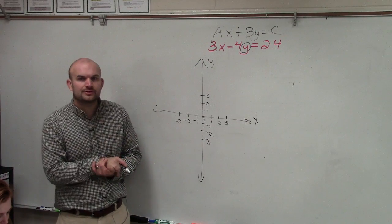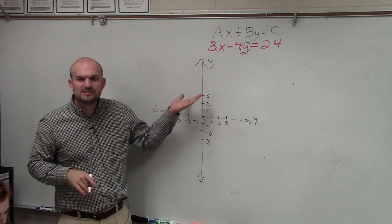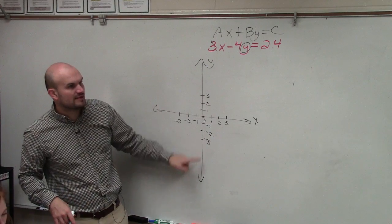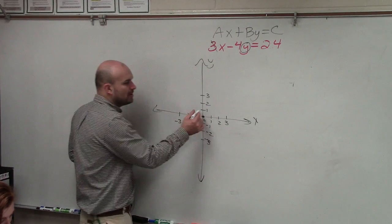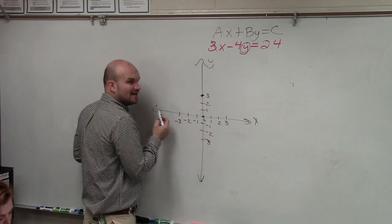Now, what I want you to understand is we've previously talked about the y-intercept. The y-intercept is where the graph crosses on the y-axis. So if you put a point on the y-axis, have I gone left or right on the x-axis?